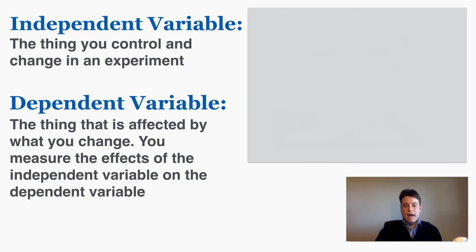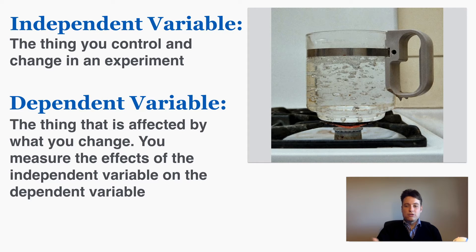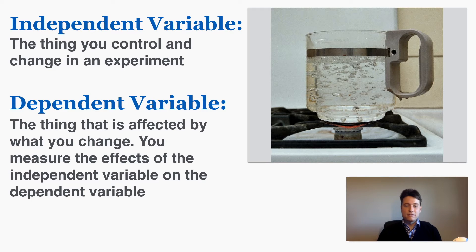Let's say that you're analyzing how heat on a stove affects the time it takes water to boil. So you're turning the heat up on different pots of water and seeing how long the water takes to boil in each pot depending on the heat. Here the independent variable would be the amount of heat that you're providing on the stove. You can choose how much you turn the stove up or down and so because the only thing that depends on is you and what you're doing, we'd say that that's the independent variable. It's what you control directly in an experiment.